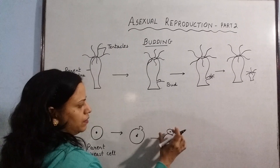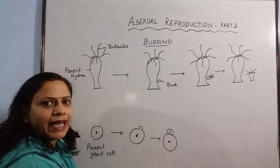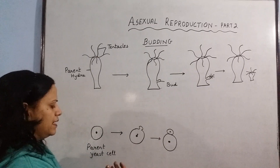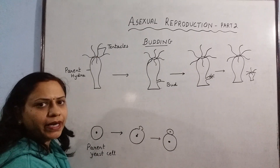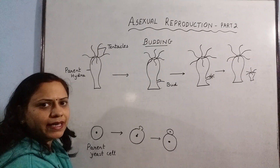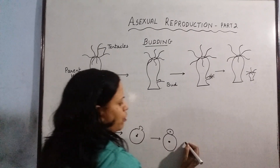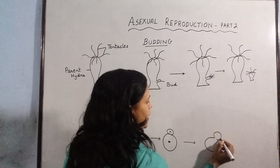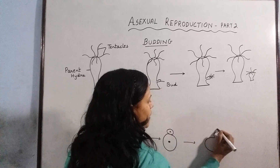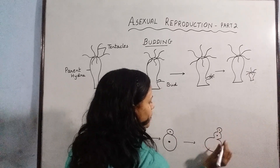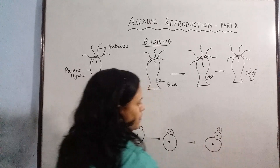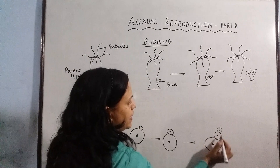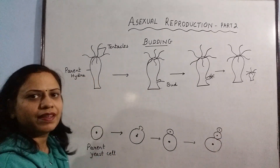Later on, this bud can detach. If it detaches, it develops a new chain of cells. Otherwise, because budding in yeast is very quick, the bud doesn't detach that fast, so it forms a chain. The bud remains attached to the parent cell and meanwhile it itself also starts budding. So a chain of yeast cells is formed, and the chain may even grow longer. This is how budding in yeast takes place.